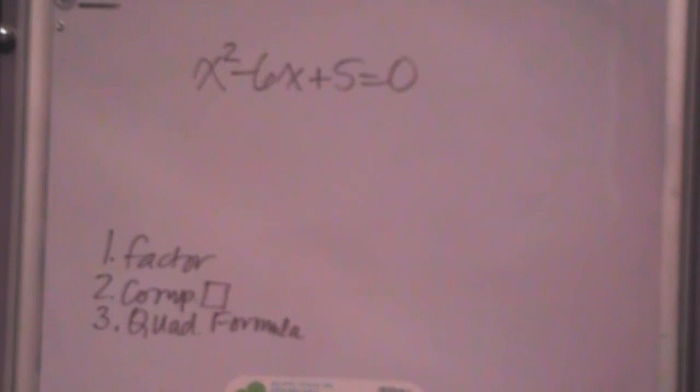Okay, so this section, they've asked you to use the method which seems easiest to you. Well, when I look at this, I immediately see 5 times 1 is 6. So the first thing I think of is factoring.